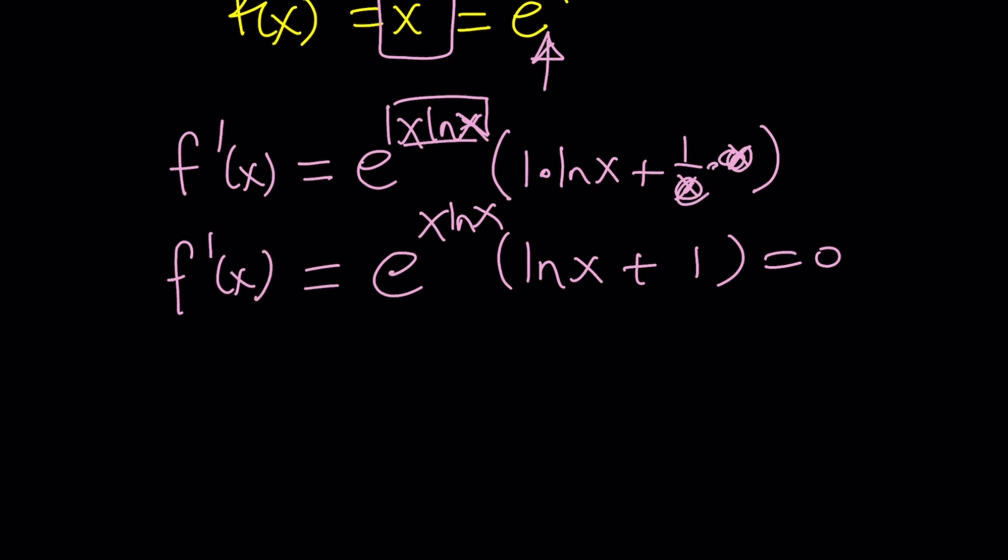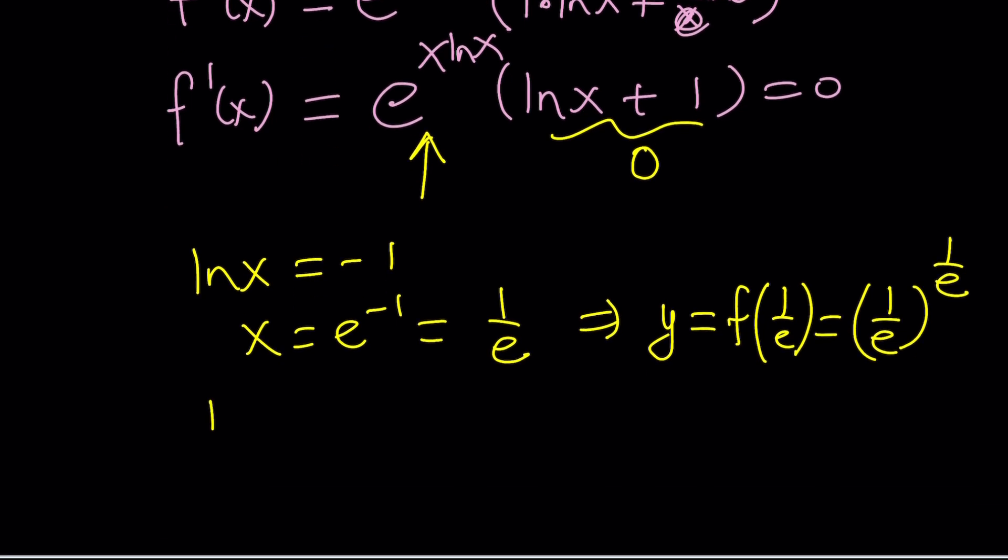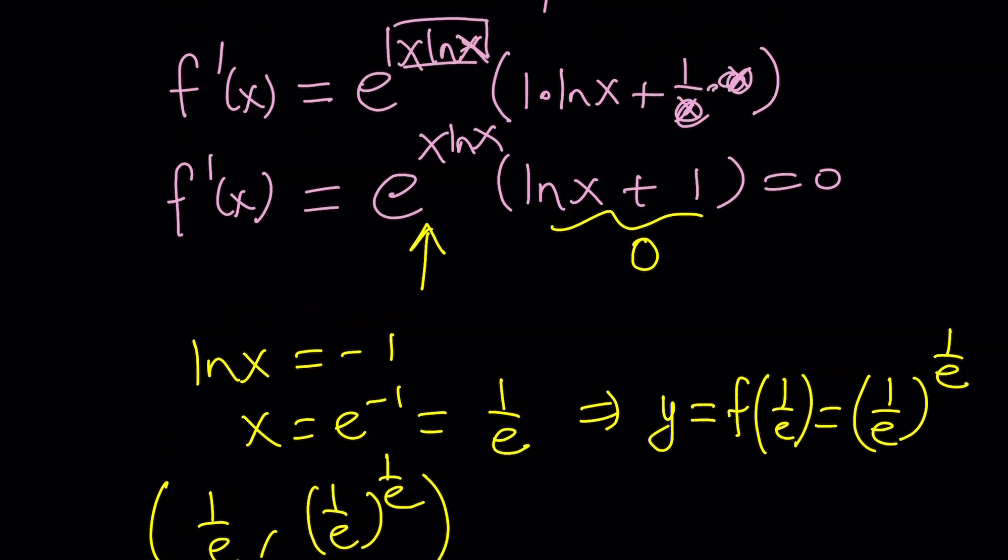And if f prime is 0, then what happens? We get the critical points. Usually, where we have a horizontal tangent, that indicates maxima or minima, right? And from here, e to the power of something cannot be 0, obviously, right? So only this can be 0, which means ln x equals negative 1, which means x equals e to the power of negative 1, or 1 over e. So that's my critical point. And if x is equal to 1 over e, y is going to be, or f of x is going to be f of 1 over e, which is 1 over e to the power of 1 over e. Remember, our function is x to the power of x. So at 1 over e, comma, 1 over e to the power of 1 over e, I do have a critical point, which happens to be the minimum.